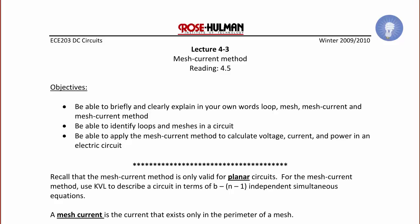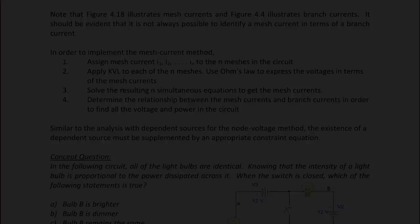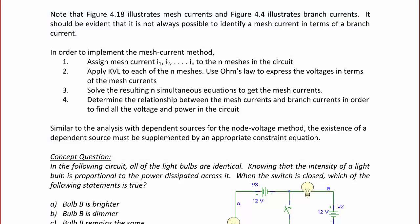Recall that the mesh current method is only valid for planar circuits. For the mesh current method, use KVL to describe a circuit in terms of the number of branches minus the quantity of the number of nodes minus one, independent simultaneous equations. A mesh current is the current that exists only in the perimeter of a mesh. Recall that we also have branch currents, where a branch current is the current through a specific element in the circuit. So a branch current may be a special case of a mesh current. Note that figures 4.18 and 4.4 in your text illustrate the differences between mesh and branch currents. It is not always possible to identify a mesh current in terms of a branch current.